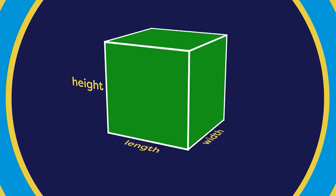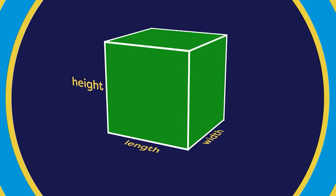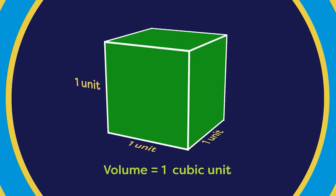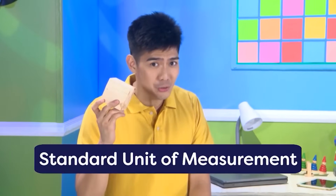Kapag ginawang cube ang square, meron na itong length, width, at height o taas — tatlong dimensions na. Kapag sinukat ang cube, kailangan sukatin ang length, width, at height para malaman ang volume. Ang volume ang magsasabi kung gaano kalaki ang space na nasasakop ng isang object. Dahil ginawa nating cube ang 1 square unit, ang volume ng cube na ito ay 1 cubic unit. Ang unit of measurement ng volume ay pwedeng cubic centimeter, cubic meter, o cubic kilometer. Para masukat ang volume, ang ginagamit ay ang cube — ang cube ang isang halimbawa ng standard unit of measurement.